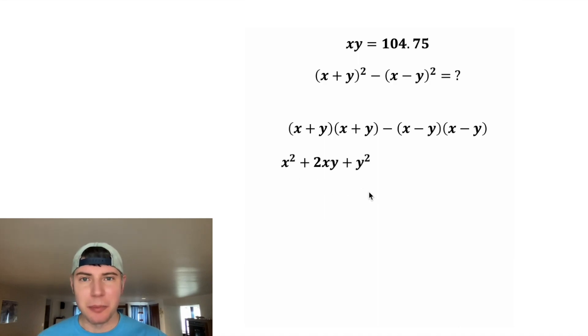It ends up being x squared plus 2xy plus y squared. And then we're going to subtract this one and we'll just use the shortcut for this one. It ends up being x squared minus 2xy plus y squared.